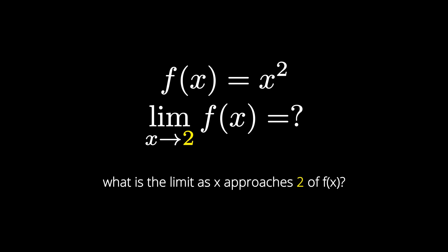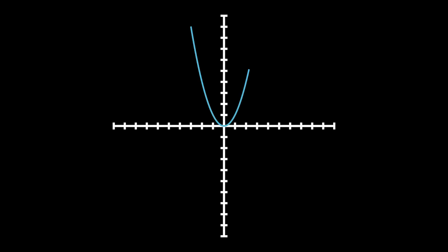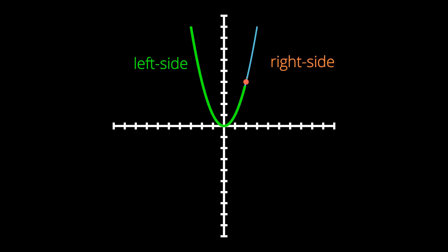But what do we mean by approach? Let's visualize f of x graphically. If we graphed x squared, and we went to x equal to 2, we can say there are two ways to approach 2. One way is from the left side, which is everything less than 2. The other way is from the right side, which is everything greater than 2. But still, what do we mean by approach?